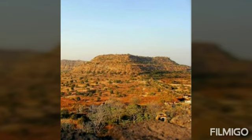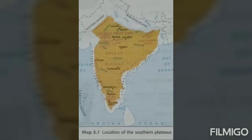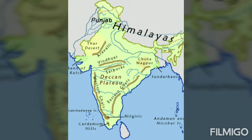A plateau is also called a tableland. The central and the southern part of India are covered by plateau. The land in this region is rocky and uneven. Look carefully at the given map — we can see that the Southern Plateau is roughly triangular in shape.